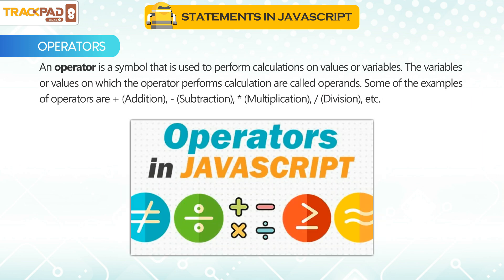An operator is a symbol that is used to perform calculations on values or variables. The variables or values on which the operator performs calculations are called operands. Some examples of operators are addition, subtraction, multiplication, division, etc.